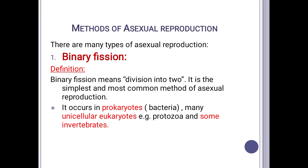Binary means two and fission means division. So binary fission is the type of asexual reproduction in which a parent's body or an organism's body divides into two parts. It occurs in prokaryotes — organisms in which a prominent nucleus is absent — then in many unicellular eukaryotes, which are organisms that have a prominent nucleus and are made up of only one cell, and also in some invertebrates — organisms in which the vertebral column is absent.